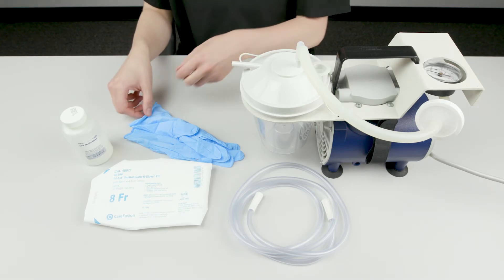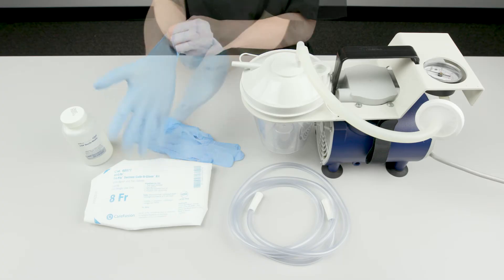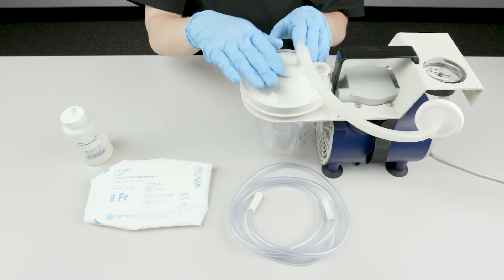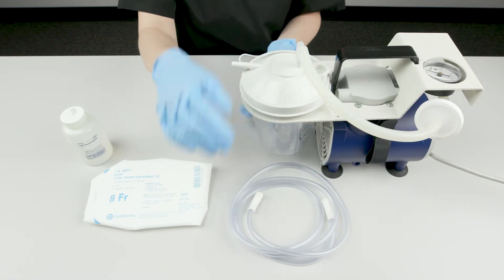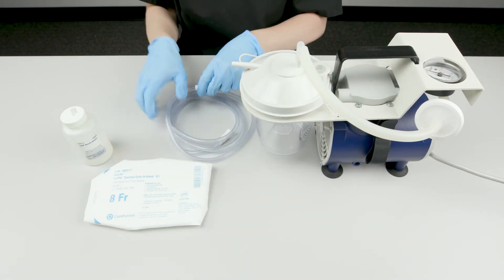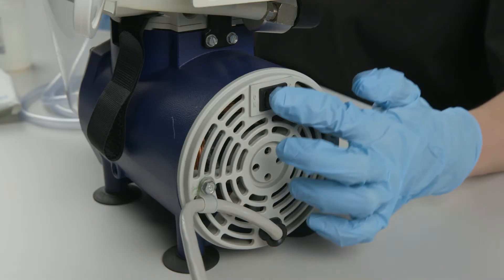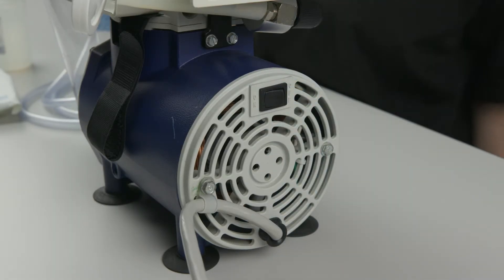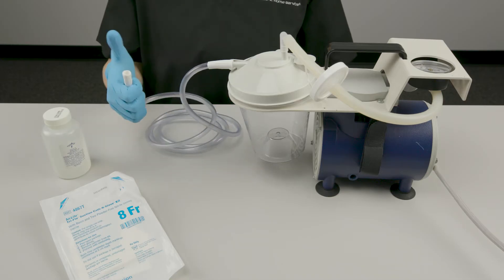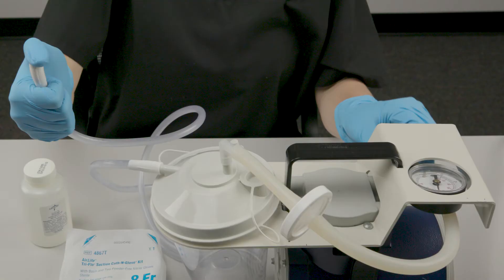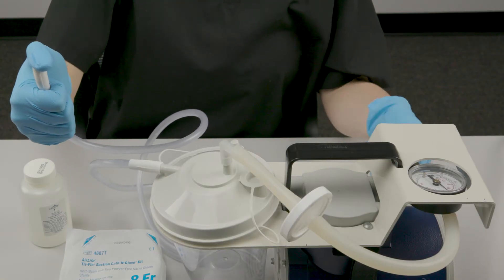Put on the non-sterile gloves. Check to make sure the suction machine and supplies are correctly assembled. Turn the suction machine on. Block the end of the suction tubing with your thumb to check suction pressure. If necessary, turn the control knob to adjust the pressure to your patient's safe suction pressure.